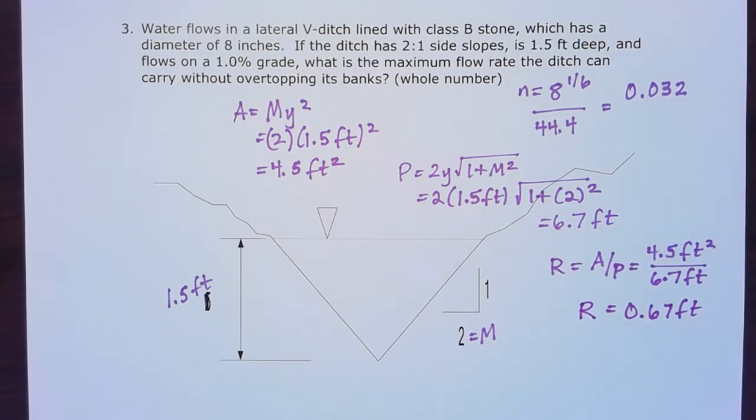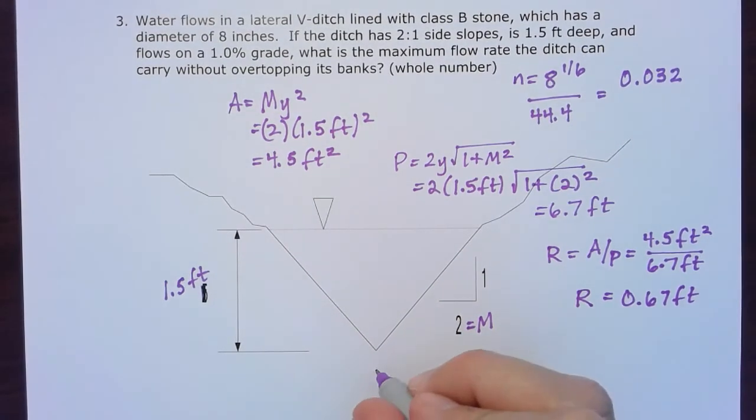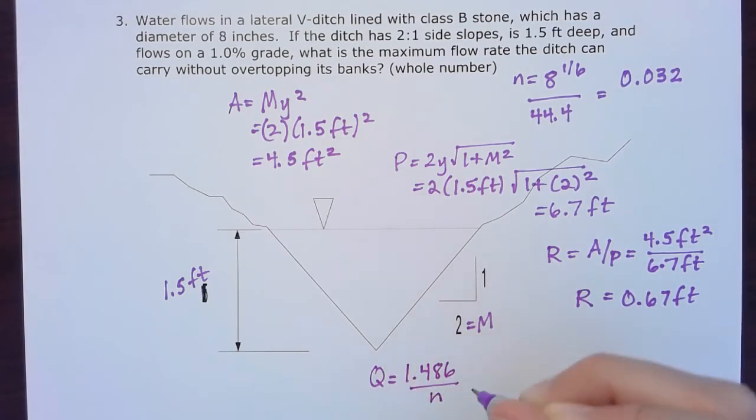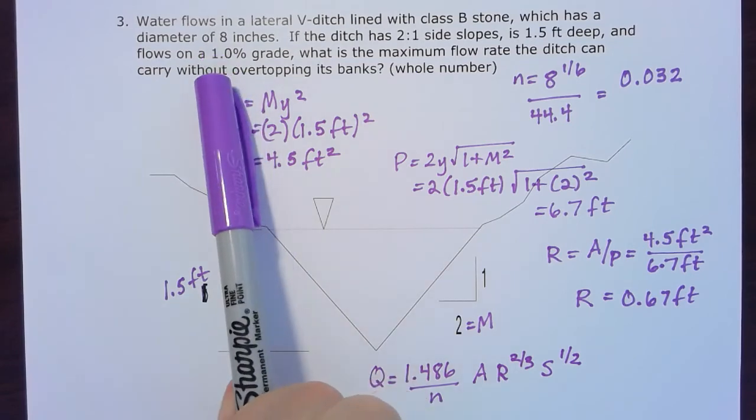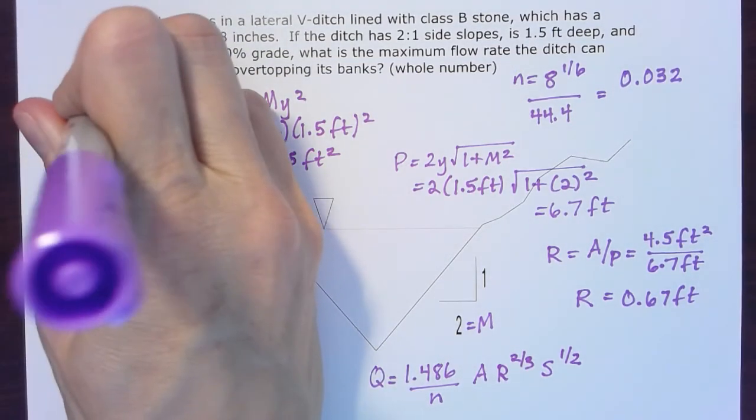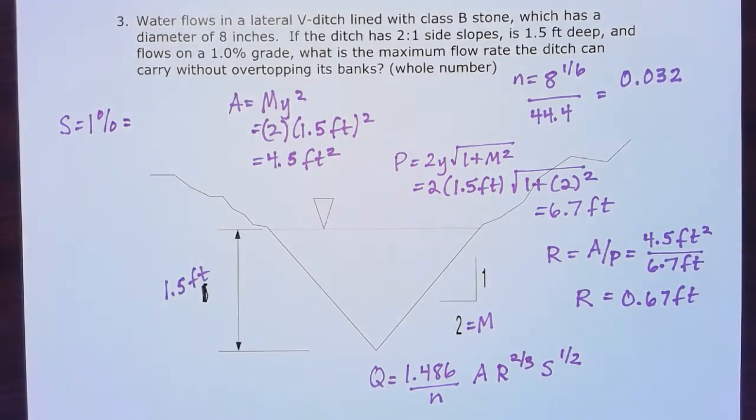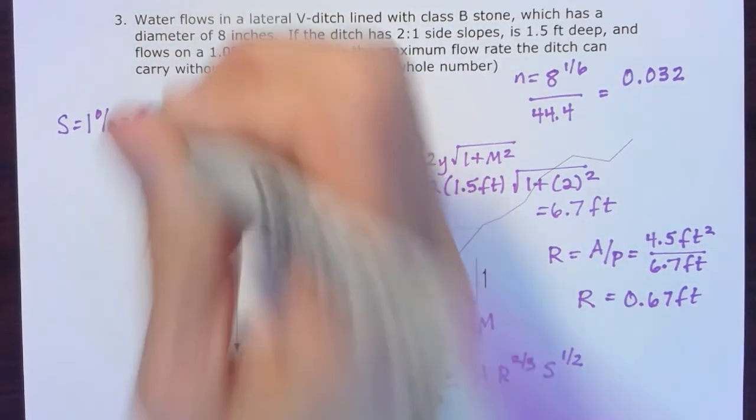Now I'm ready to plug into the Manning equation and solve for Q. So Q equals that conversion factor, 1.486, divided by N times the area times the hydraulic radius to the two-thirds times the slope to the one-half. I'm told it's a one percent grade, so I'll use that value for slope. But remember, when I plug slope into the Manning equation, I want to put that slope in decimal form, so S equals 0.01 for my equation.